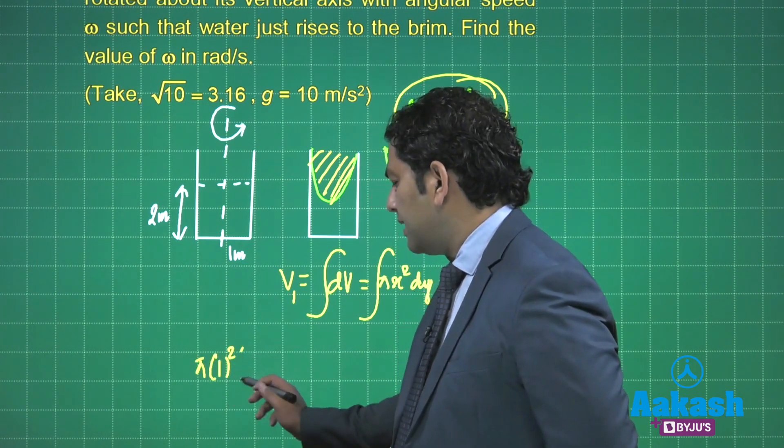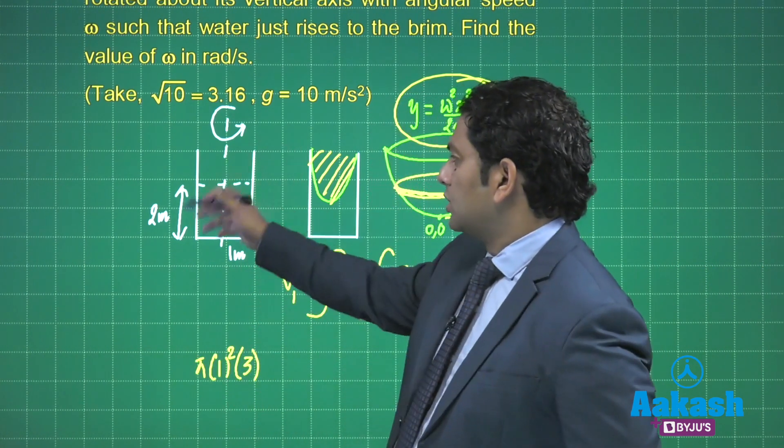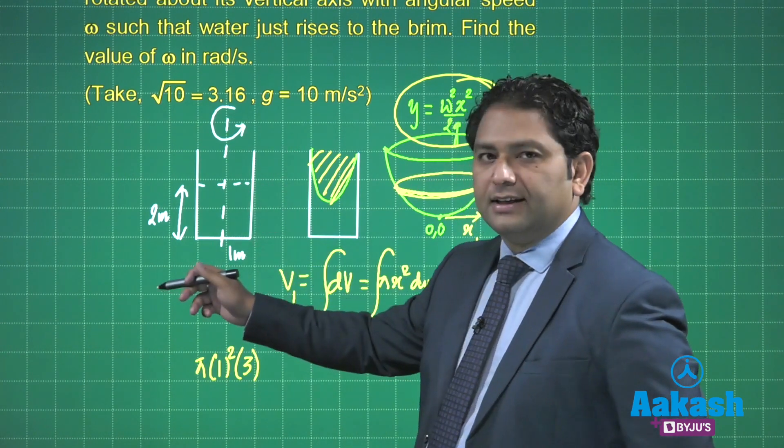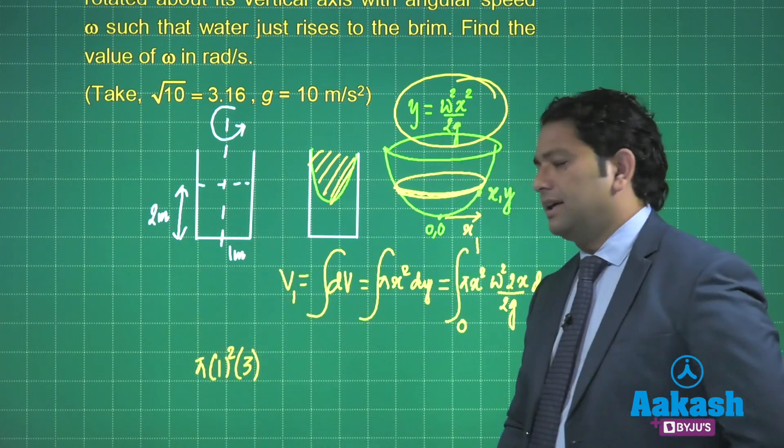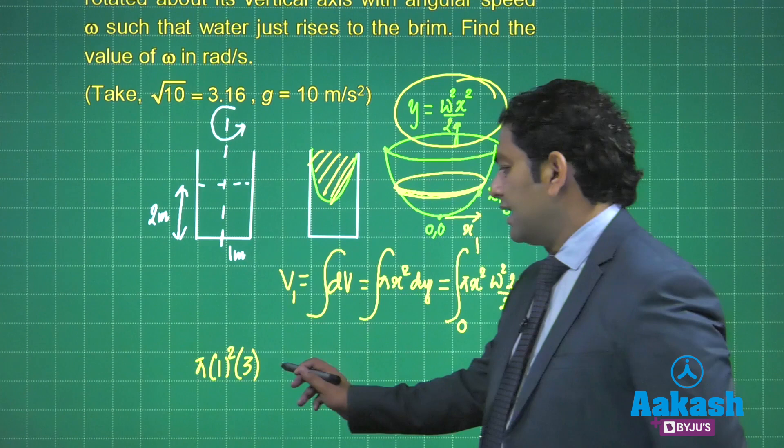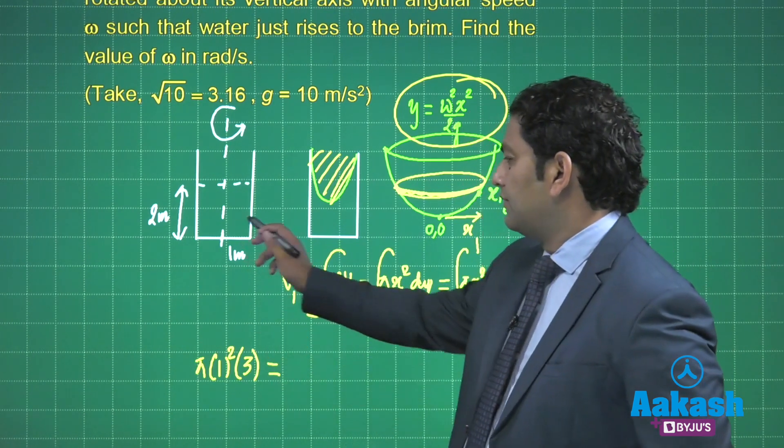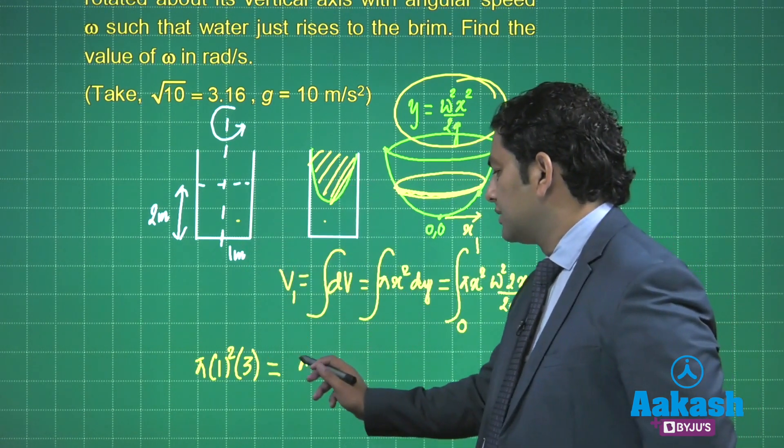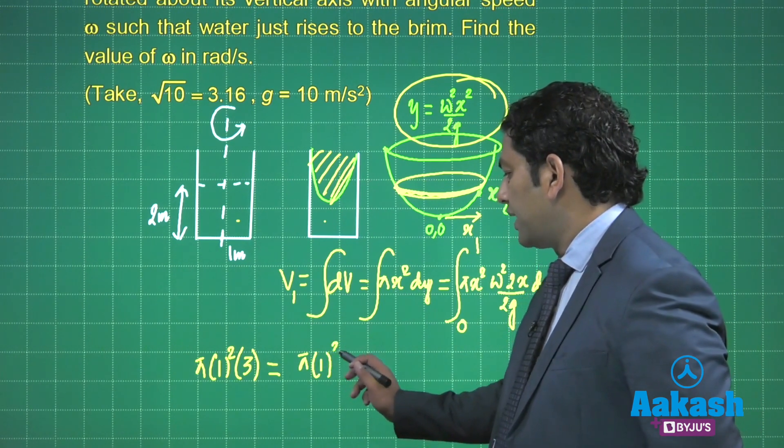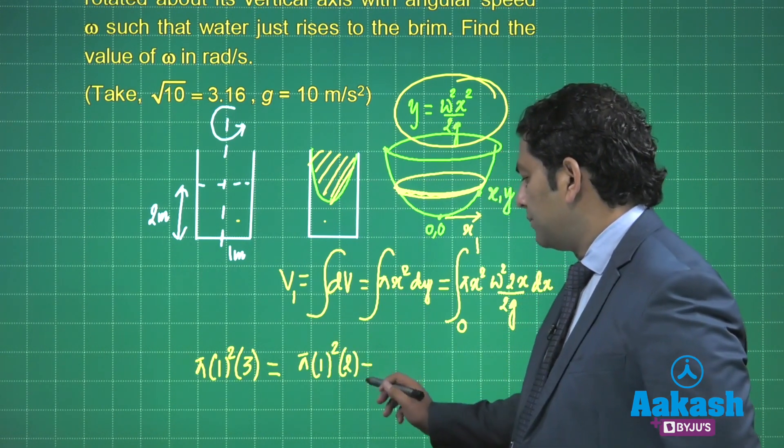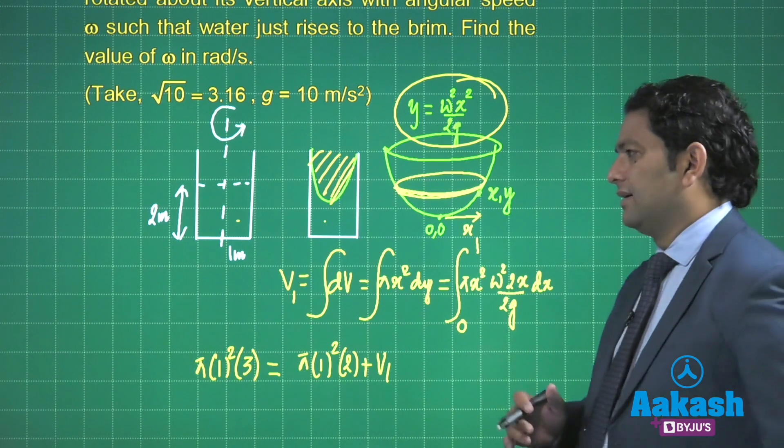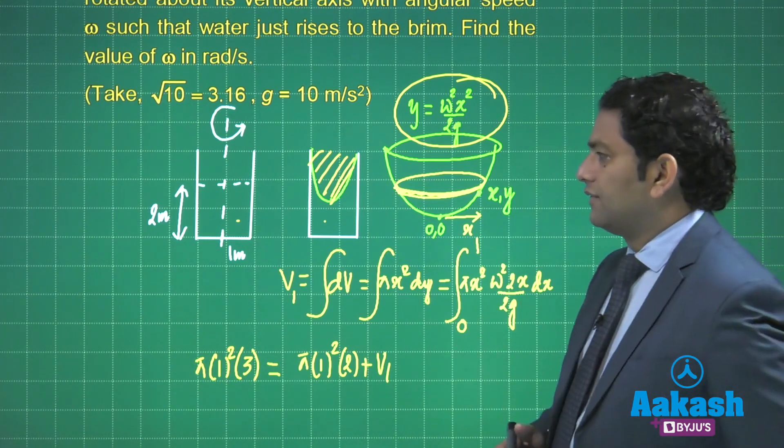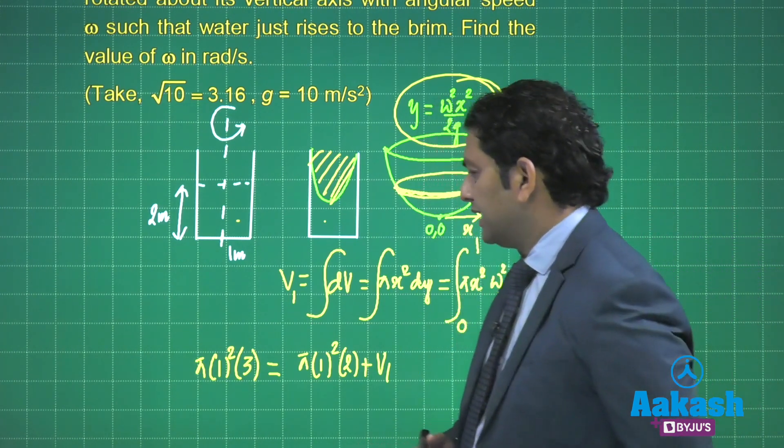That would be the total volume, and that volume of the cylinder is volume of water plus volume of the paraboloid: πr²·2 + V₁. I know a little bit of solving has to be done.